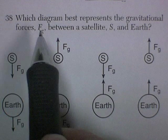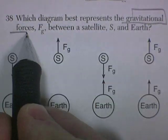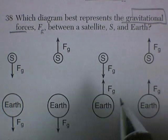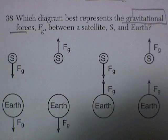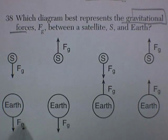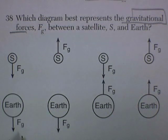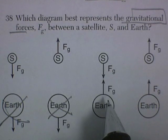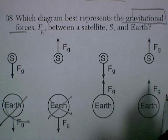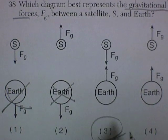Question 38. Which diagram best represents the gravitational forces between a satellite and the Earth? The forces would be equal. A satellite pulls on the Earth the same force the Earth pulls on the satellite. This looks like the right answer. They're both attracting each other. And here the satellite is being pulled away from the Earth. So I'm going to go with this choice.